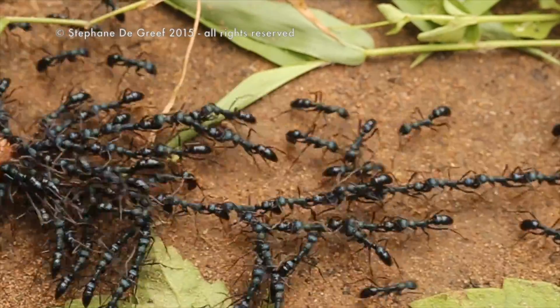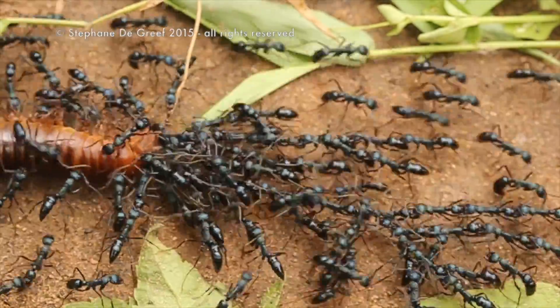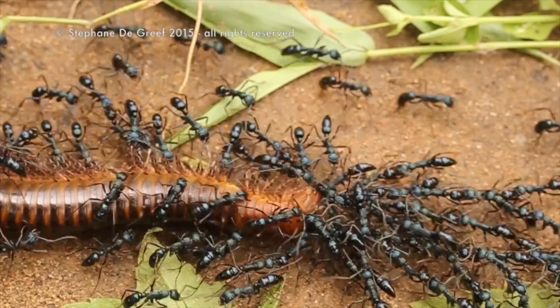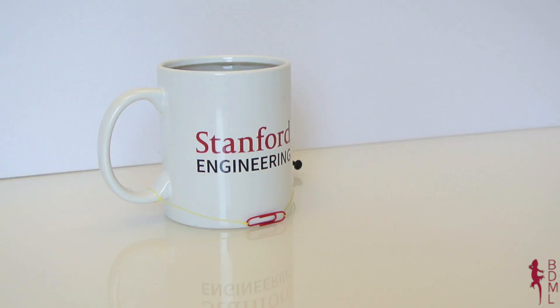Here, a swarm of ants works together as a team to move a giant millipede. With no space to grab onto, the ants make strong chains by grabbing onto each other.